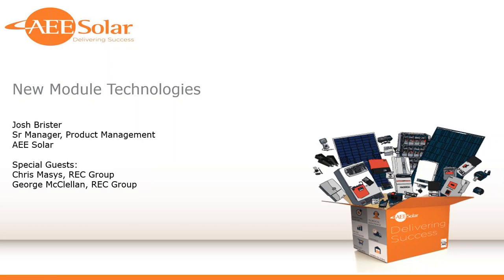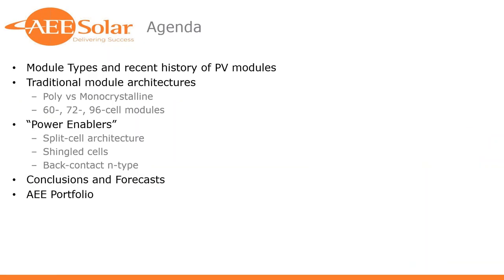I'd like to kick off with just a brief overview of the agenda, make sure we're all aligned on what we're covering today — what you'll experience here in the next 45 or 50 minutes. We'll have some time at the end for any questions, anything you'd like to know about modules. In any conversation around new module technologies, we want to cover what's status quo, what's current. To cover that, we need to understand where we've come from. So we'll walk through a recent history of PV modules and talk about traditional module architectures. The big dichotomy is going to be poly versus monocrystalline. We won't spend much time on thin film — it's just a part of the market we don't really see a lot here at AE Solar, especially in the residential space. If you've got questions about that, reach out to us offline.